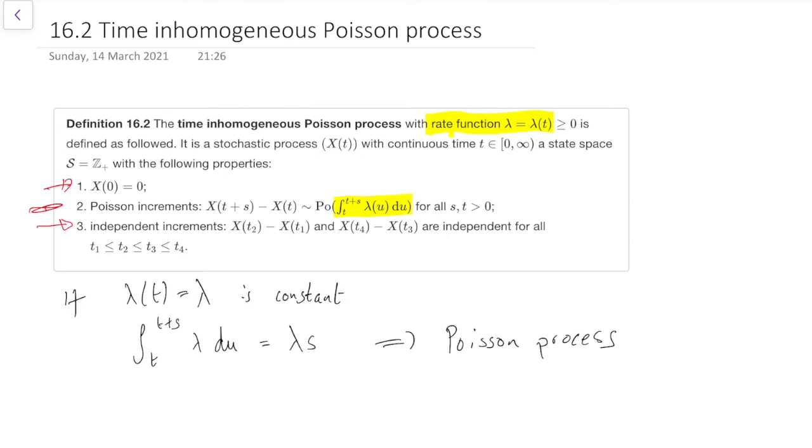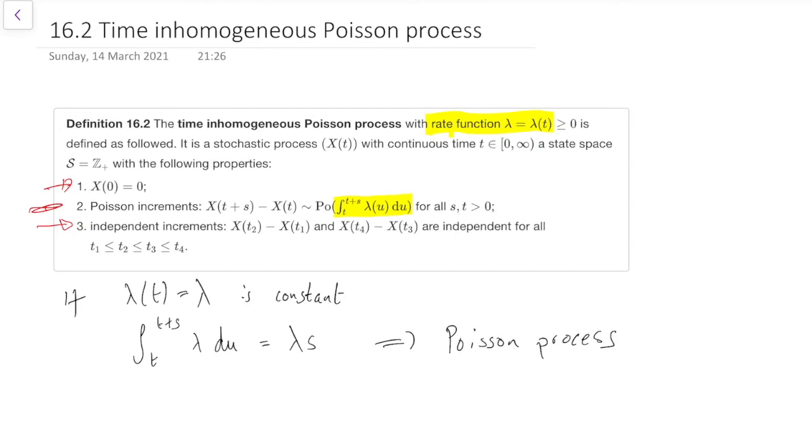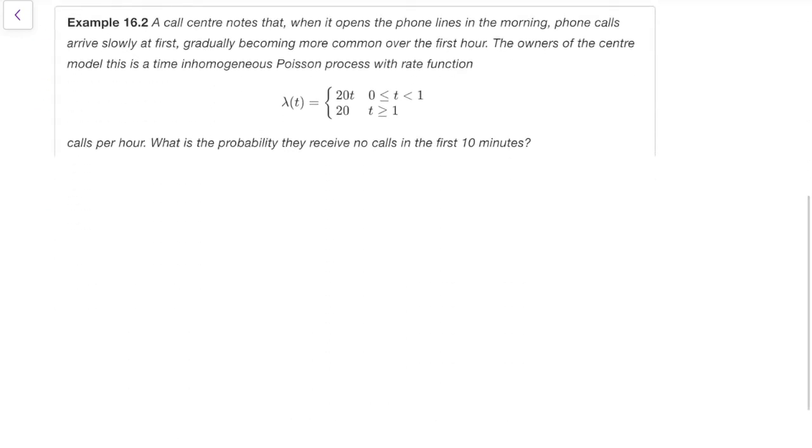This will all become a lot easier to understand if we look at an example. So here's example 16.2. A call centre notes that when it opens its phone lines in the morning, phone calls arise slowly at first, but gradually become more common over the first hour. The owners of the centre model this as a time inhomogeneous Poisson process with this rate function.